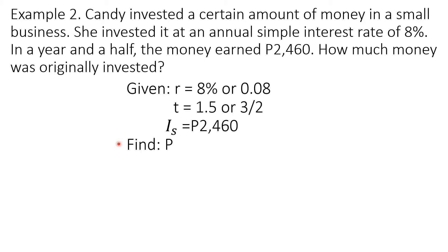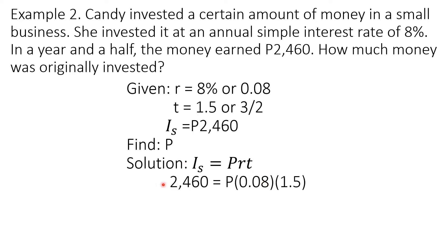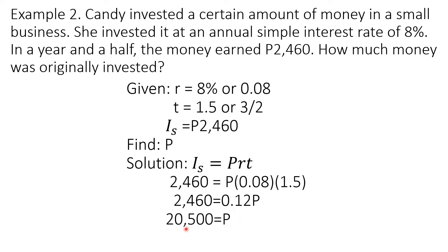Since this involves simple interest, we use the formula I sub S equals P times R times T. Since all variables have values except one, we solve for P. Substituting: 2,460 equals P times 0.08 times 1.5. Multiplying 0.08 by 1.5 gives 0.12, so 2,460 equals 0.12P. Using MPE, we divide both sides by 0.12, and we get P equals 20,500. By reflexive property, the money originally invested is P20,500.